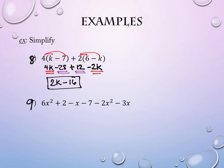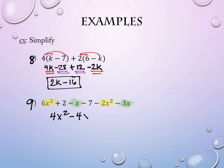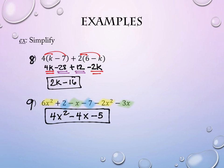Our last example doesn't have any parentheses at all, but there's still a lot going on. Combine like terms: the two x squared terms combine to give 4x squared. The negative x and negative 3x are both negative, giving negative 4x. Then we have 2 and negative 7, which gives negative 5. So the final answer is 4x squared minus 4x minus 5.